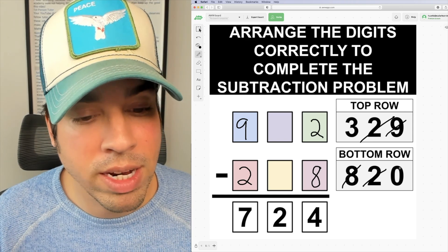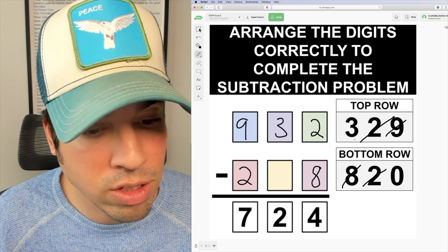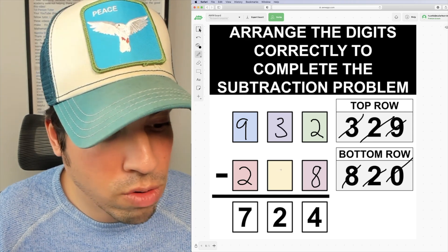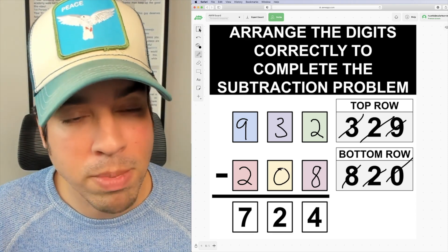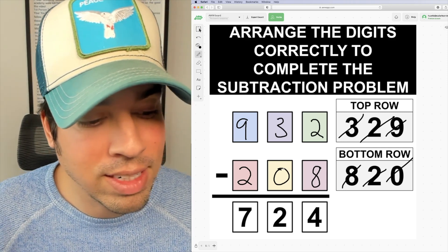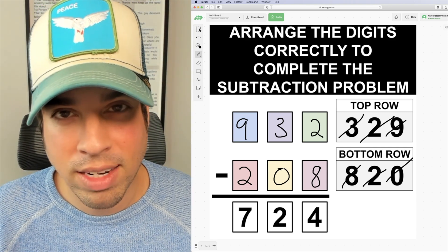This of course now leaves the three and the zero. So naturally three has to go here and zero has to go here. And the final answer is 932 minus 208. And you can check that out yourself. That indeed equals 724.